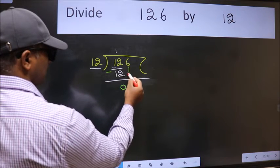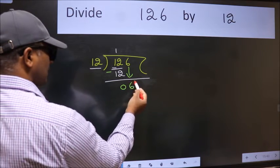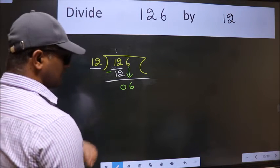After this, bring down the beside number. So 6 down. After this step, the mistake happens and the mistake is this.